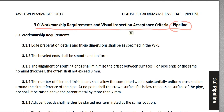Chapter 2 is Workmanship Requirements and Visual Inspection Acceptance Criteria for Structural Steel. Chapter 3 is Pipeline, and Chapter 4 is Workmanship Requirements and Visual Inspection Acceptance Criteria for Pressure Piping. So Chapters 2, 3, and 4 have the same title except for Structural Steel, Pipeline, and Pressure Piping.